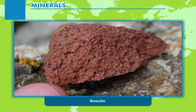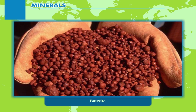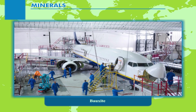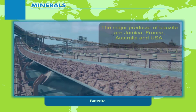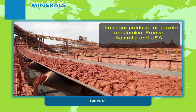Aluminium is extracted from its ore called bauxite. This metal is light and strong and is preferred to iron in many uses. The aircraft industry is a big user of aluminium. Other industries that use aluminium are electrical and coin minting. The major producers of bauxite are Jamaica, France, Australia, and USA.